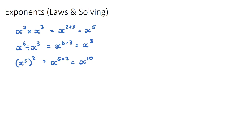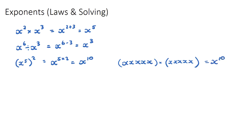How I think about this: x to the power of 5 is x times x times x times x times x. If this is being squared, I have that whole thing multiplied by itself — so I essentially have 10 x's all being multiplied, giving x to the power of 10. So if you have a power to a power, you multiply the powers.